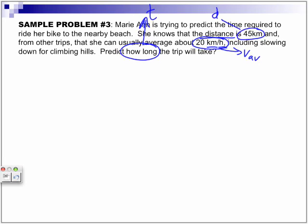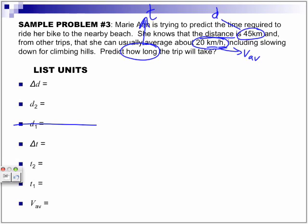So the next thing what I want you guys to do, and as we did in the previous example, is to list the units. So let's list the units. Now, because she is starting from some original location, our zero point, we know we don't care about her initial distance, but I'll show it to you, and her initial time, because we know those are all going to be zero.